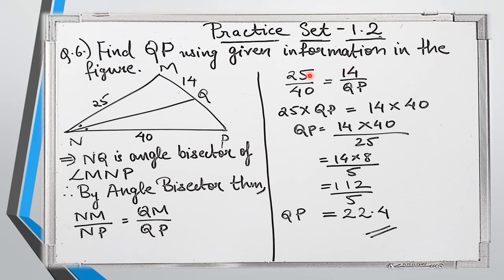Substituting the values: NM is 25, NP is 40, MQ is 14, and QP is what we have to find. So 25 into QP equals 14 into 40. Dividing both sides by 25, we can simplify 40 and 25 by 5, giving 8 over 5. So QP equals 14 into 8 upon 5, which is 112 upon 5. The answer in decimal form is 22.4. Therefore QP equals 22.4.